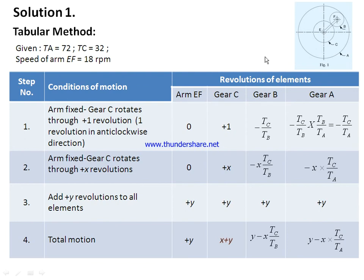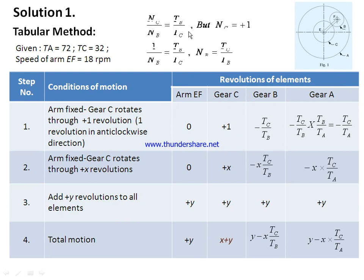With the given information, we will use the tabular method. As a first step — remember, the first step is very important, so pay attention. The arm is fixed, hence its speed will be zero, and we give one revolution to gear C in the clockwise direction. Hence the speed of gear C is plus one.